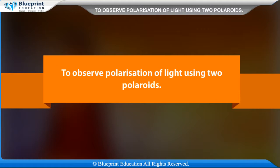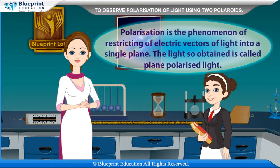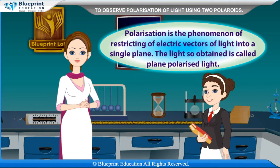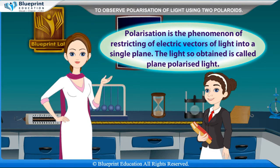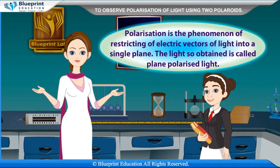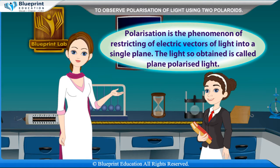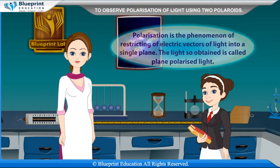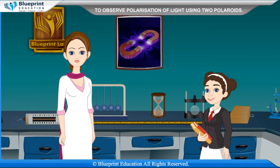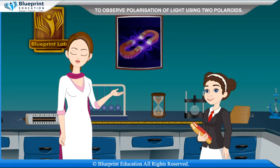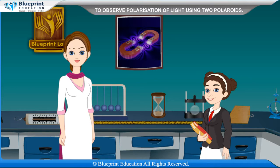To observe polarization of light using two polaroids. Polarization is the phenomenon of restricting of electric vectors of light into a single plane. The light so obtained is called plane polarized light. Polarization of light shows that light waves are transverse in nature.